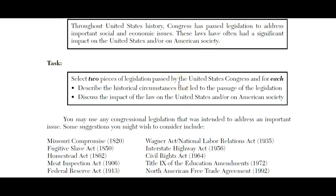Then pick two pieces of legislation. In paragraph two, talk about your first piece and cover both the historical circumstances — how did this come to be, what was going on that led to this legislation — and then the impact: what was the effect on the United States and society, and how did it change America? Third paragraph is your second piece of legislation, and you do the same. Fourth and last paragraph is your conclusion, where you summarize what you said and explain how it proves your thesis.